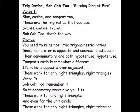You need to remember the trigonometric ratios. Sine's numerator is opposite, and cosine's is adjacent. Their denominators are both hypotenuse. Tangent's ratio is somewhat different — its ratio is opposite over adjacent. These work for only right triangles.